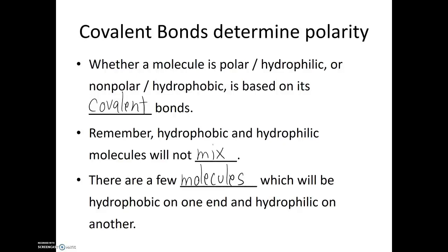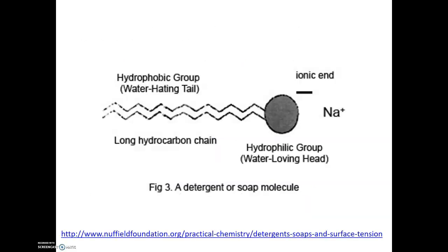Yet another one you may be familiar with is dishwashing soap or detergent. The way that dishwashing soap works is that it's hydrophobic on one end and hydrophilic on the other. The hydrophobic end binds to grease, oil, and other things that would be hard to remove with just water alone, yet the hydrophilic end of the soap molecule is attracted to water. In this way, soap helps us remove grease and other hydrophobic molecules from our dishes and utensils that would otherwise be very difficult to remove with just water. Now that we've talked about covalent bonds, in our next video we'll discuss non-covalent bonds.